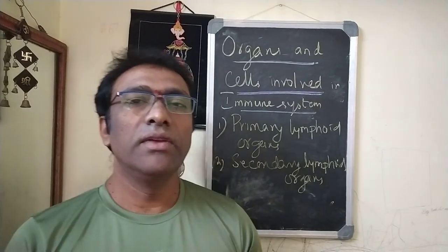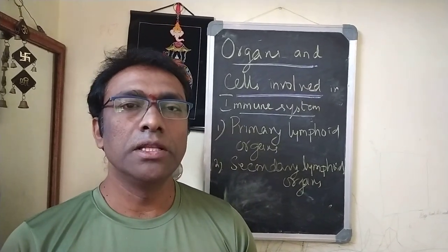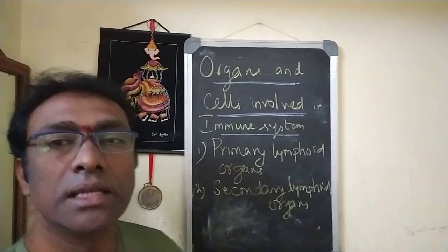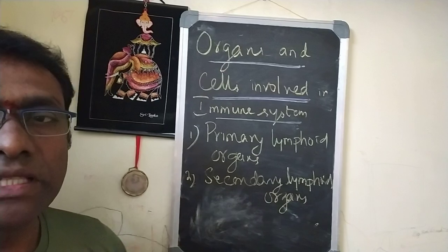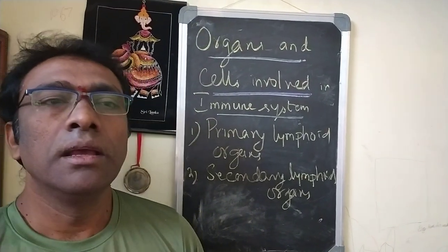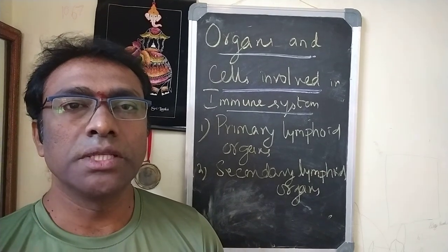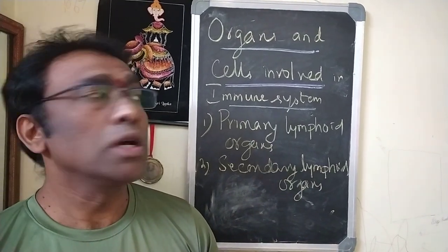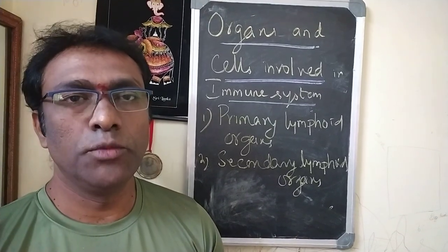Hello students, we are back for the study of the immunology part, which includes the organs and the cells involved in the immune system. Like the previous class, we have learned some basics of immunology like immune response, primary immune response, and secondary immune response. Today's topic covers the different organs and cells involved in the immune system.